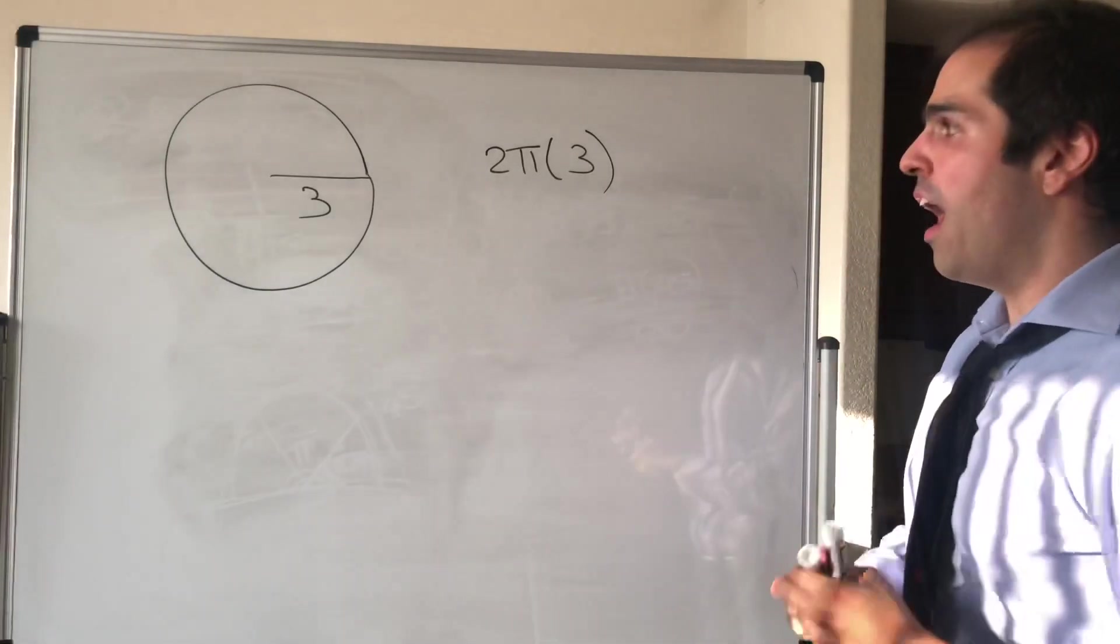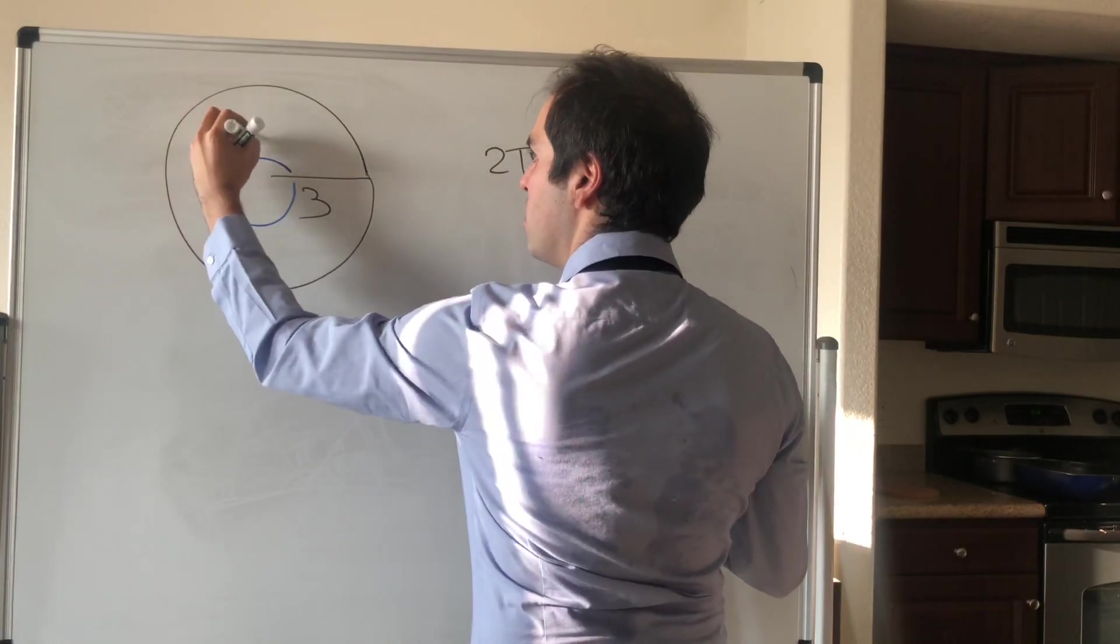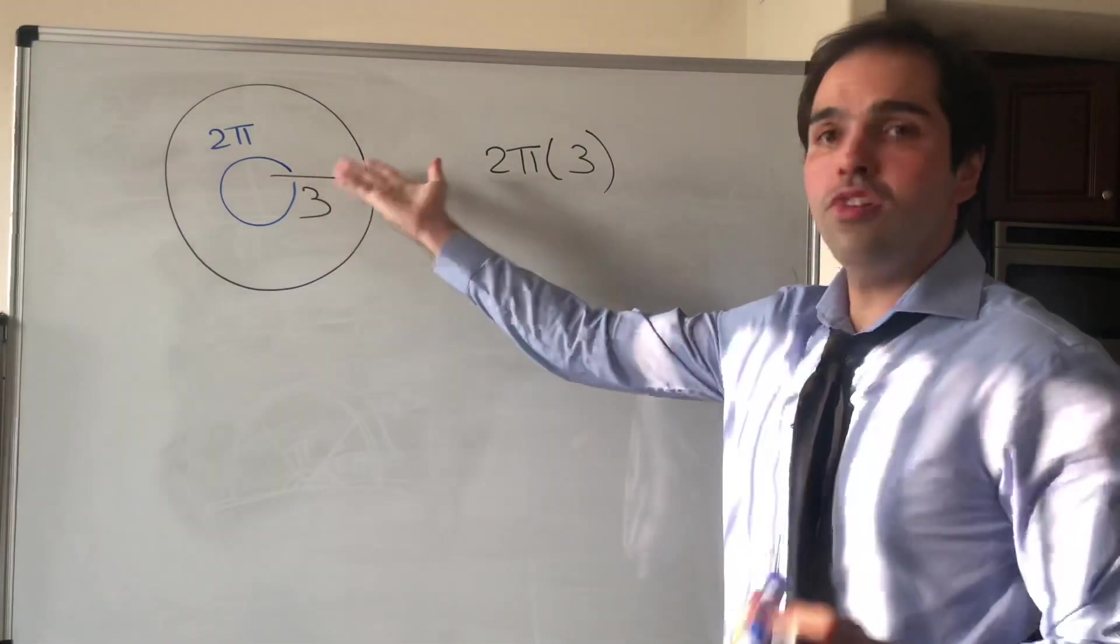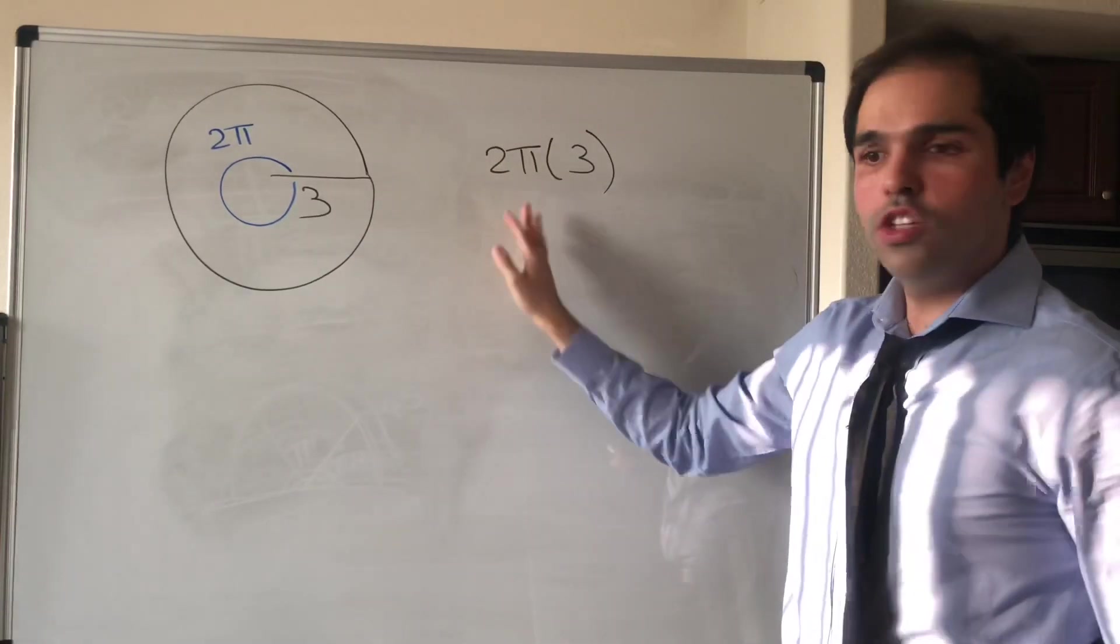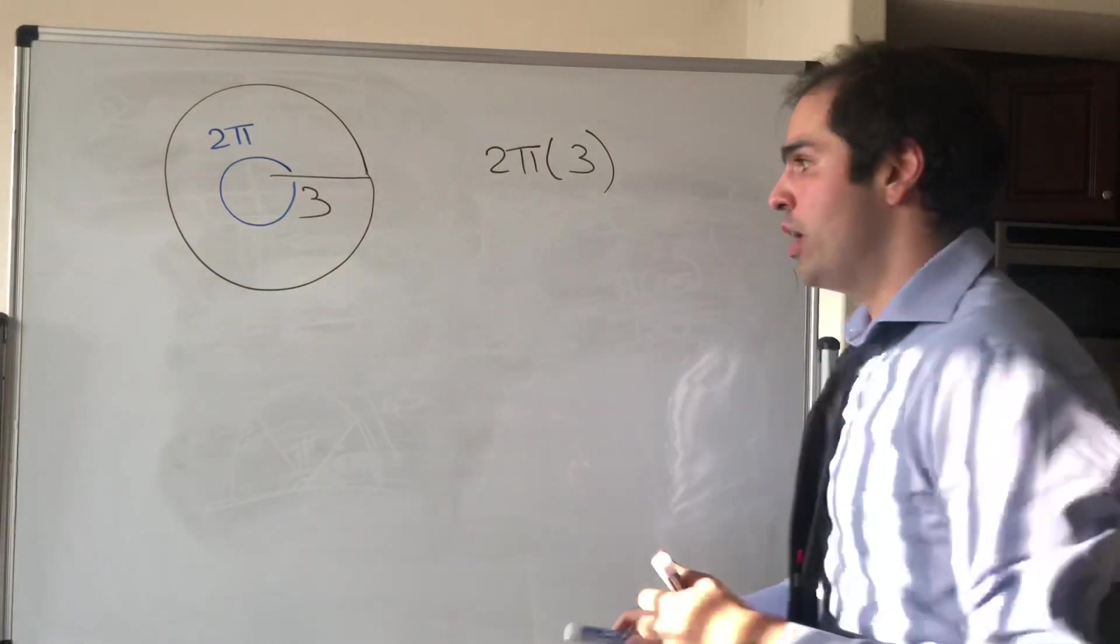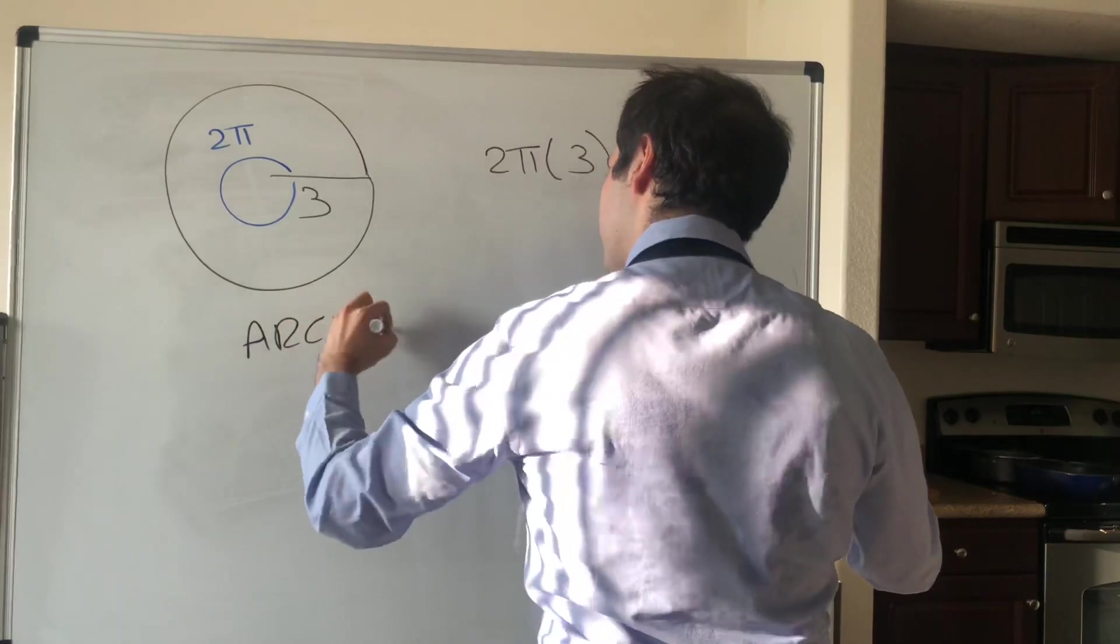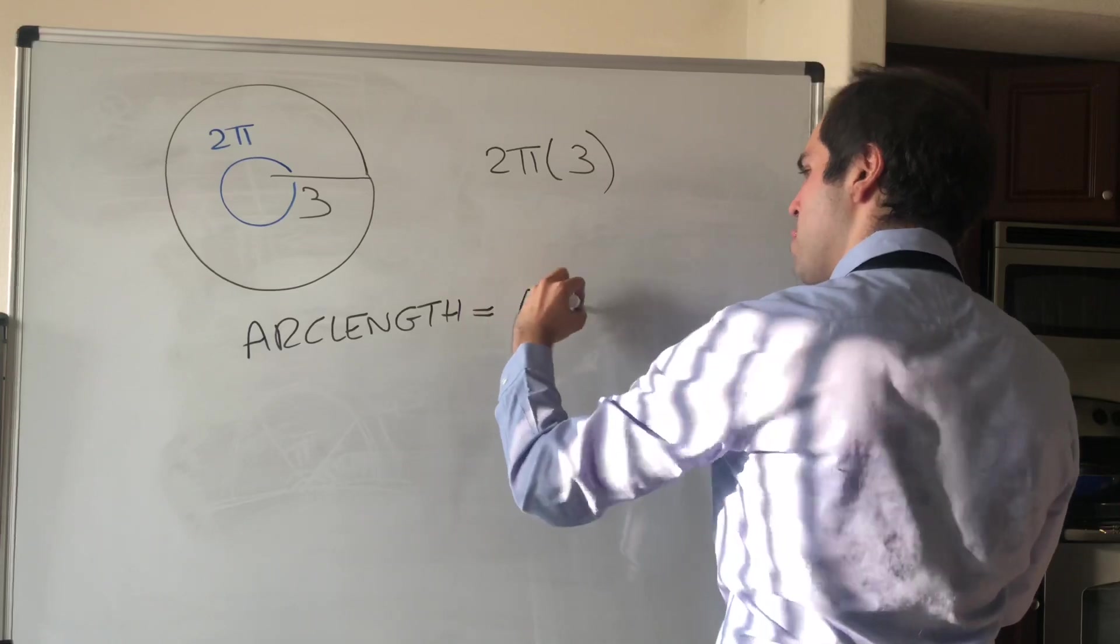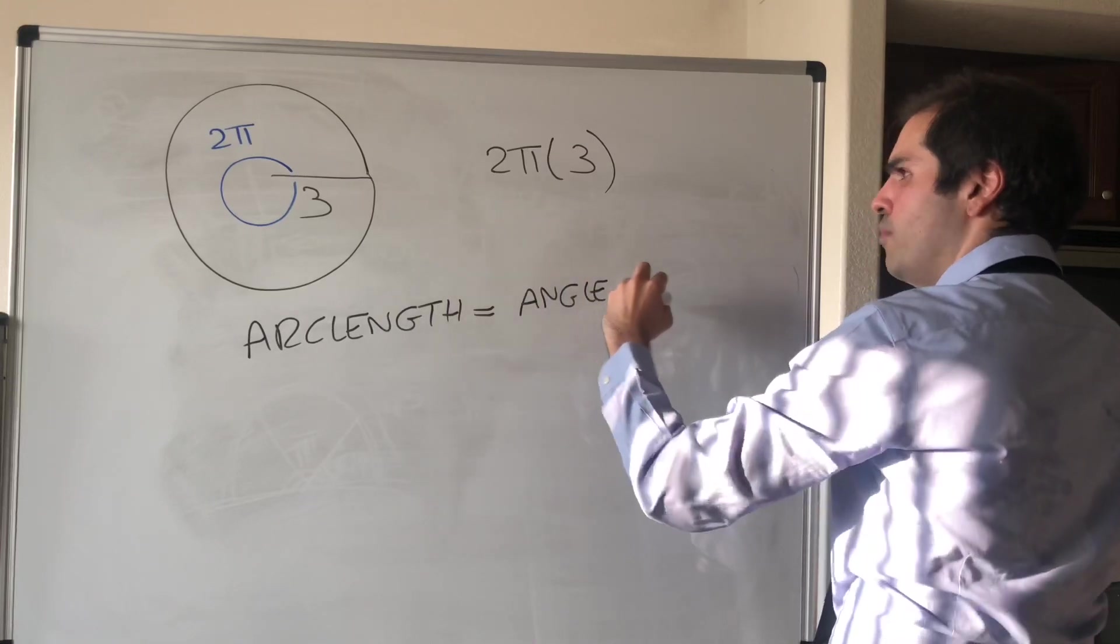But what is 2π? Well, it's basically 360 degrees. 360 degrees is 2π radians. And so in particular, the awesome thing about radians is, in order to get the arc length, you just multiply the radius by the angle in radians. So arc length equals angle in radians times the radius.